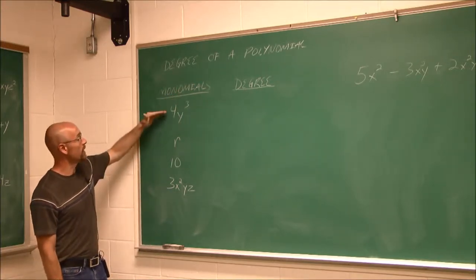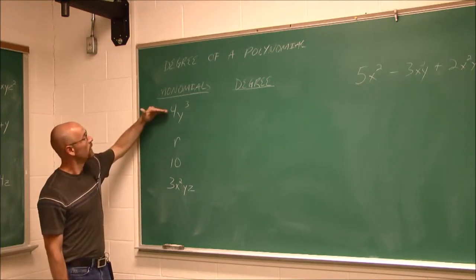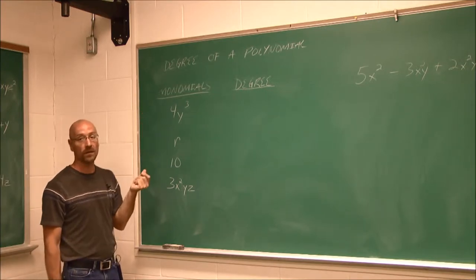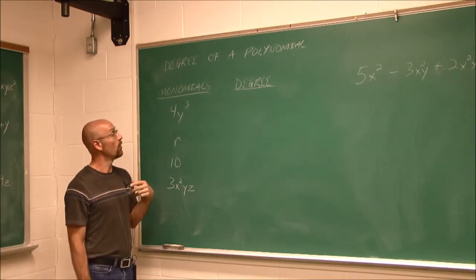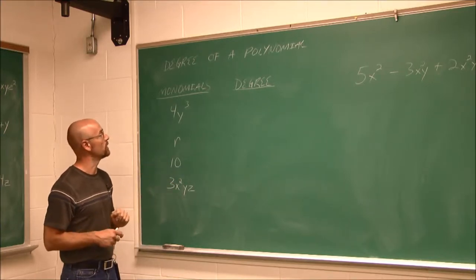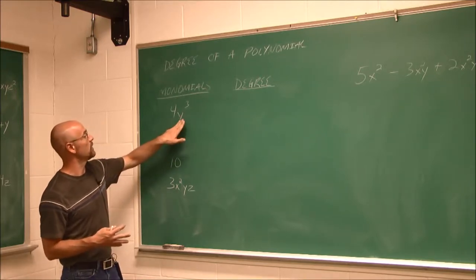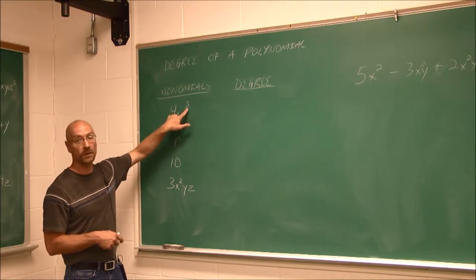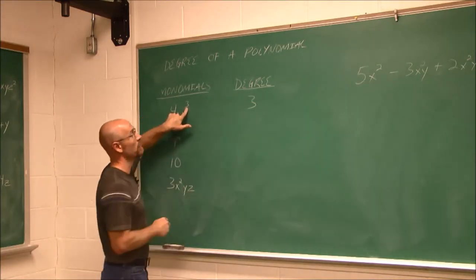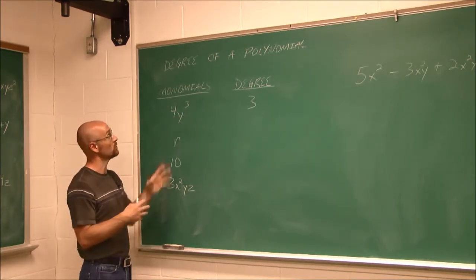Here we have a series of monomials, a term we defined in the previous video. To determine the degree of a polynomial, we look at the power of the variables, or the power sum of the variables, where we add them all together. We'll see one example of that. So to determine the degree, we just look at the power and say, well, there's only one variable here. Its power is 3. This indicates its degree. This would be a third degree monomial, or a third degree polynomial if there were more terms and they were less than this 3.